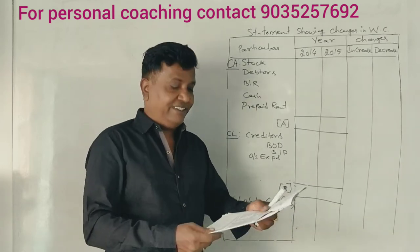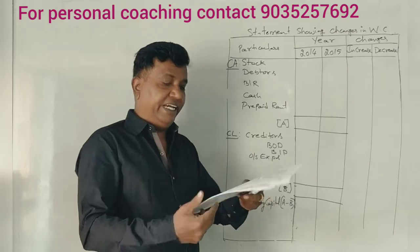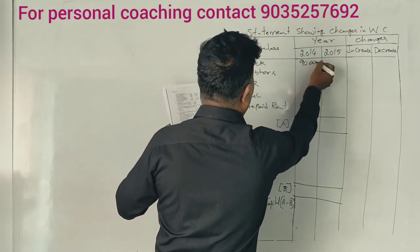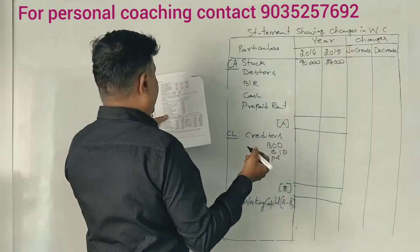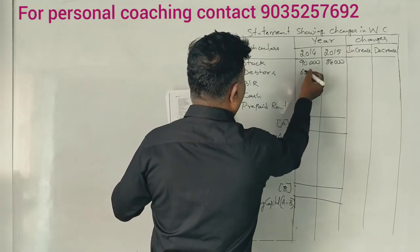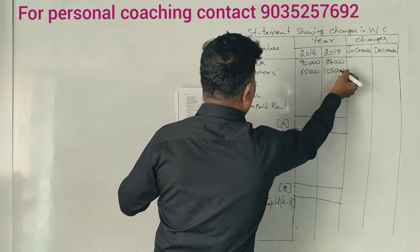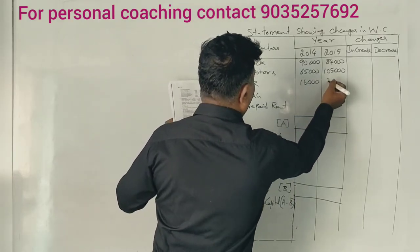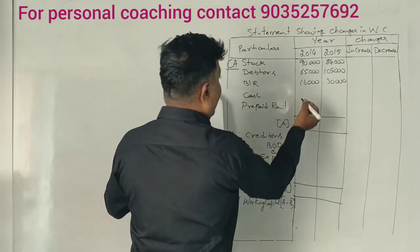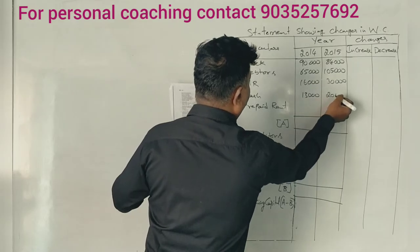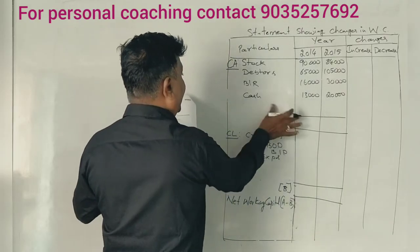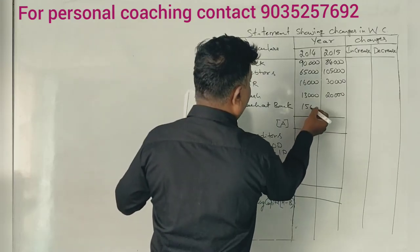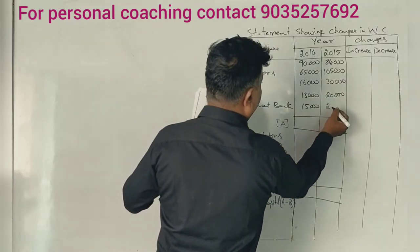On the asset side, we have the current assets. Stock is 90,000 and 84,000. Debtors are 65,000 and 1,05,000. Bills receivable: 16,000 and 30,000. Cash in hand: 13,000 and 20,000. Cash at bank: 15,000 and 20,000.